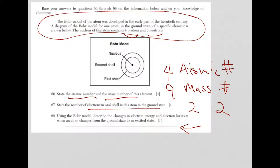Finally, the last question. Using the Bohr model, describe the changes in electron energy and electron location when the atom changes from the ground state to the excited state. Okay, so electron energy, electron location. Make sure you always read the statement or the question before you go to answer it. So you have to answer two questions here, just like in 66 and just like in 67.